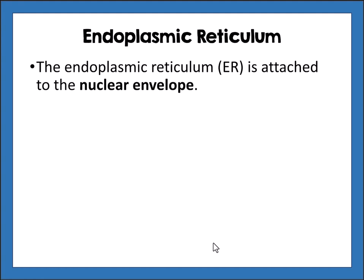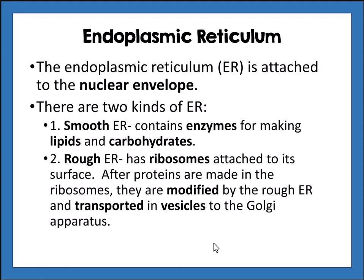The endoplasmic reticulum, or ER, is attached to the nuclear envelope. There are two kinds: smooth ER, which contains enzymes for making lipids and carbohydrates, and rough ER, which has ribosomes attached to it. After proteins are made in the ribosomes, they are modified by the rough ER and transported in vesicles to the Golgi apparatus.